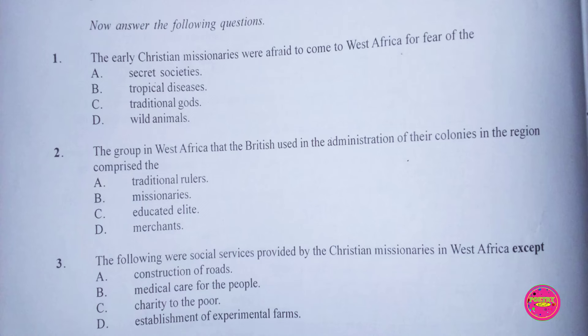Question 3. The following were social services provided by the Christian missionaries in West Africa except: A. Construction of roads, B. Medical care for the people, C. Charity to the poor, D. Establishment of experimental farms. The correct answer to this question is D. Establishment of experimental farms.